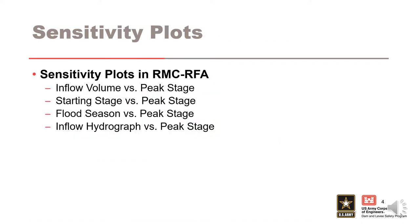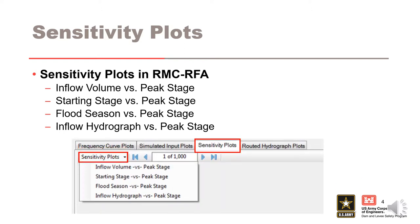The sensitivity plots can be found for each simulation in the Sensitivity Plots tab. There are four sensitivity plots included in RMC-RFA, and you can view the sensitivity plots for each realization. If the expected frequency curve-only simulation type was run, there will only be one realization.